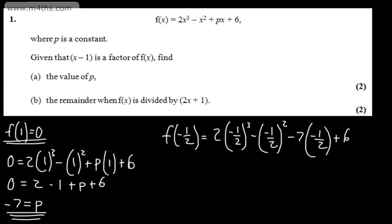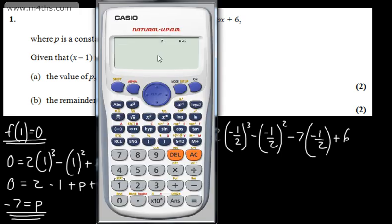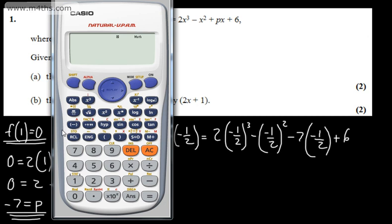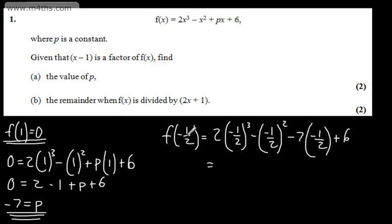I'm going to put this into the calculator now. So I'll enter -0.5 as my answer, then calculate 2(answer)³ - (answer)² - 7(answer) + 6. That gives me 9. So f(-1/2) = 9, which means the remainder when f(x) is divided by (2x + 1) is 9.